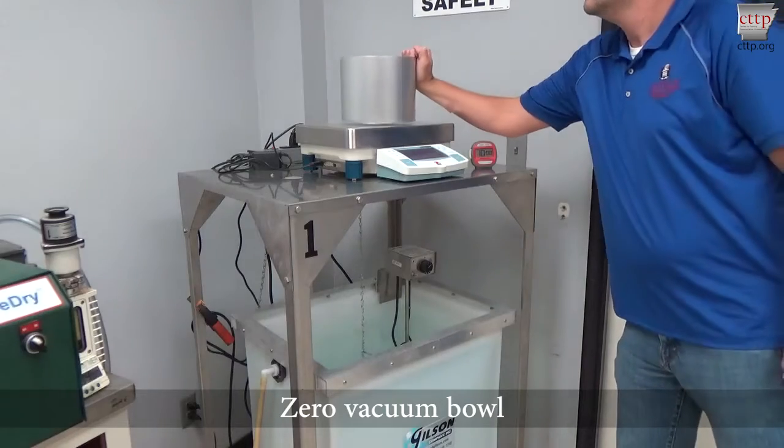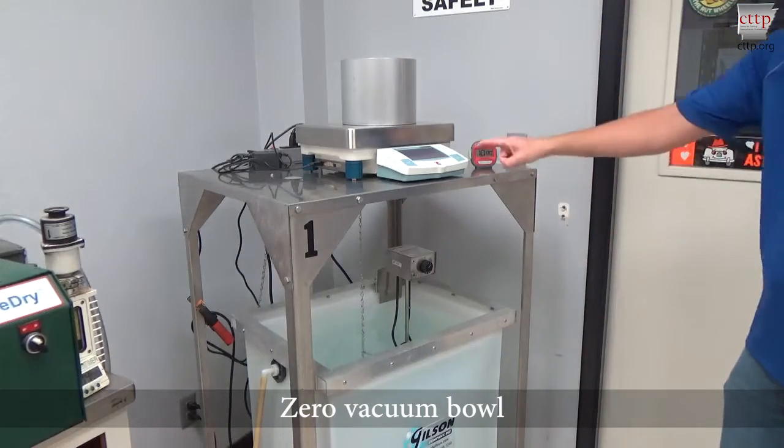Place the vacuum bowl on the scale platform. Zero the scale or record the tare weight.